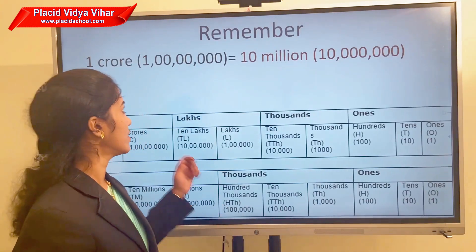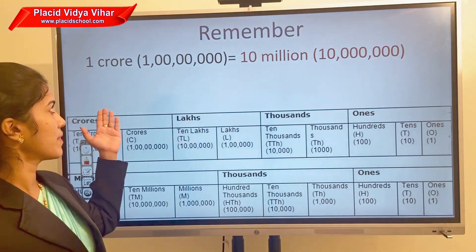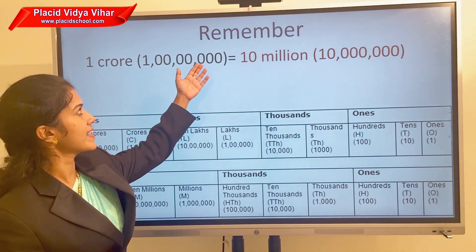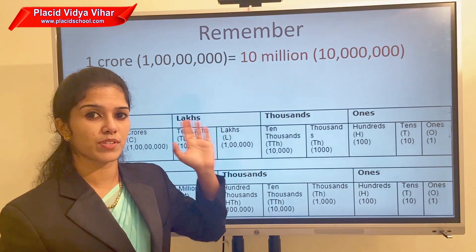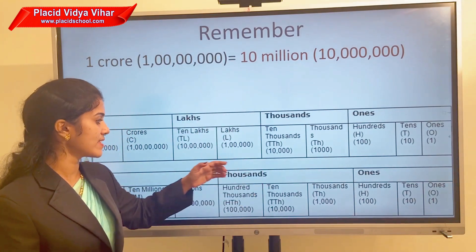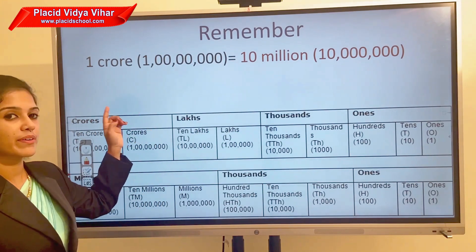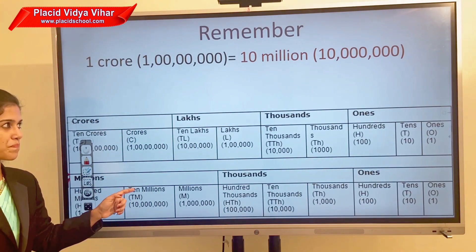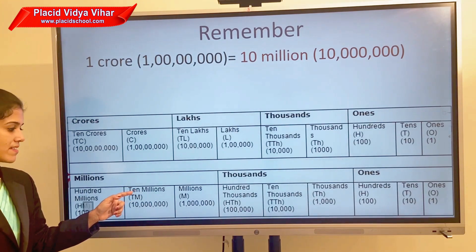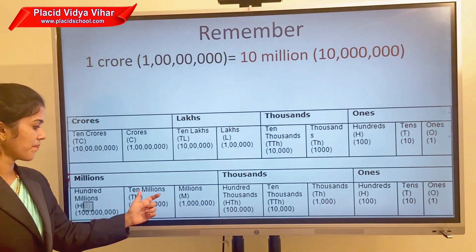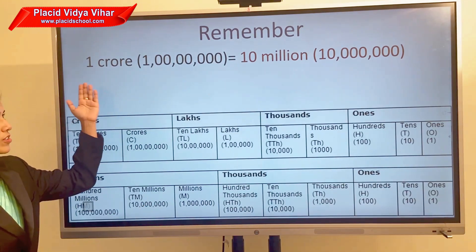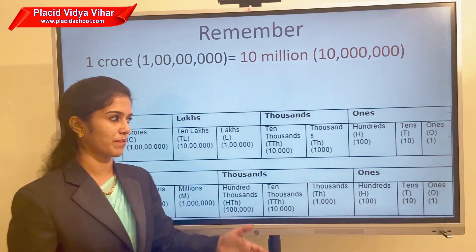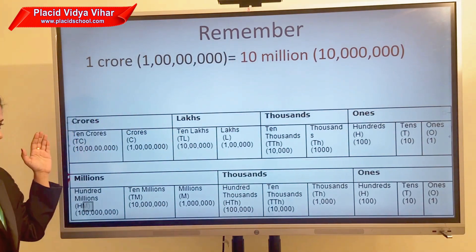Do you remember that 1 crore in the Indian system has 1 followed by seven zeros? In the international system the number corresponding to 1 crore is 10 million. You can multiply 1 million by 10 to get 10 million. So 1 crore equals 10 million in the international system. You can compare the numbers by looking at this chart.